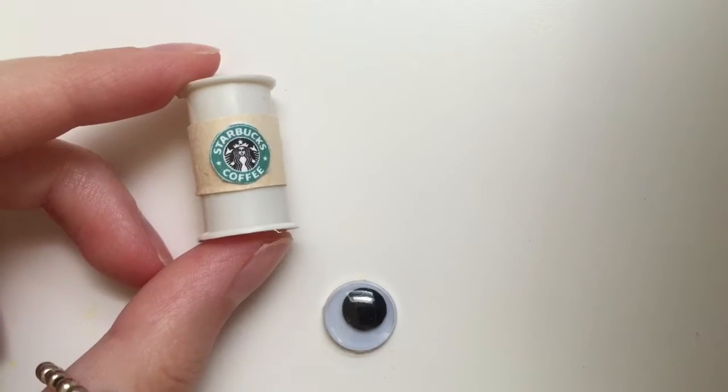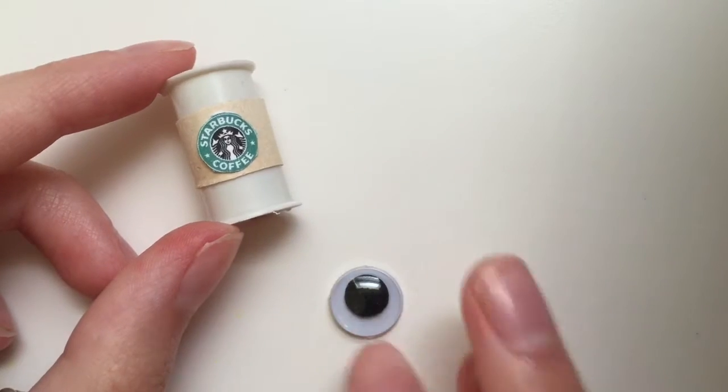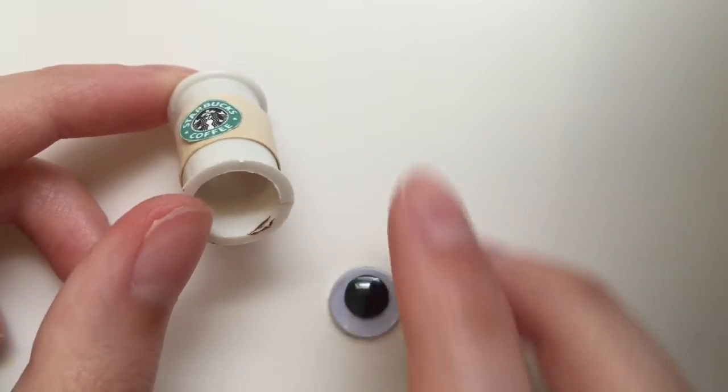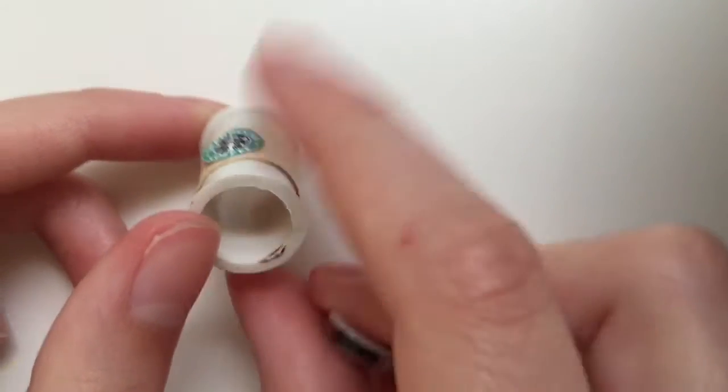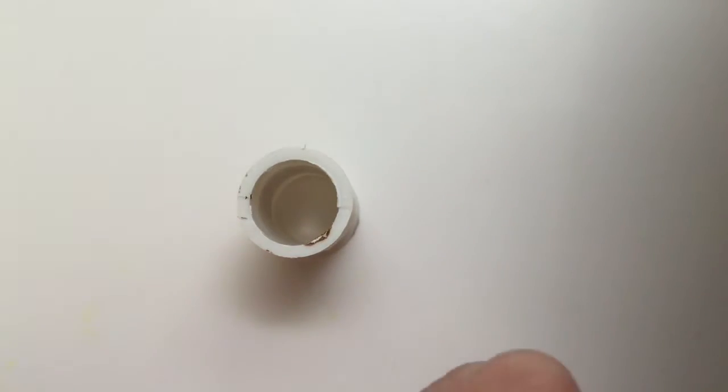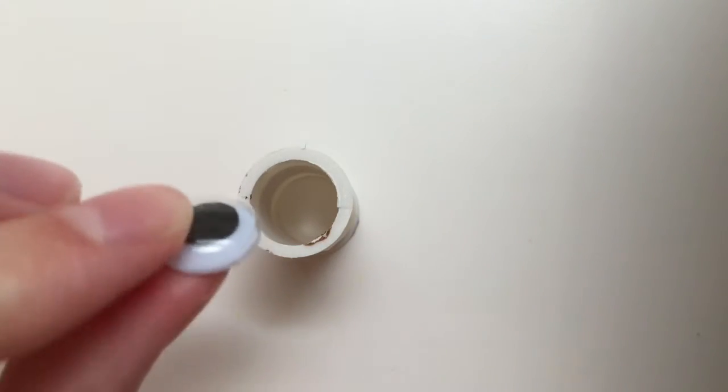Now to make sure the paint or coffee won't fall out of the bottom, we are going to use an object to cover the bottom. As you can see I chose a googly eye which fits perfectly, and don't worry you will not see it's an eyeball.